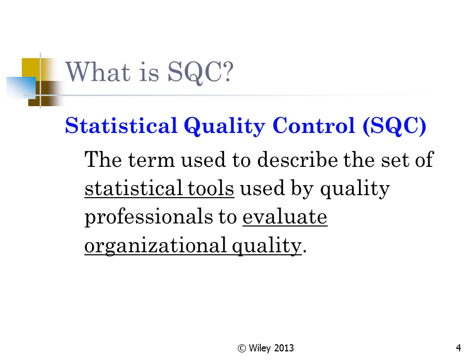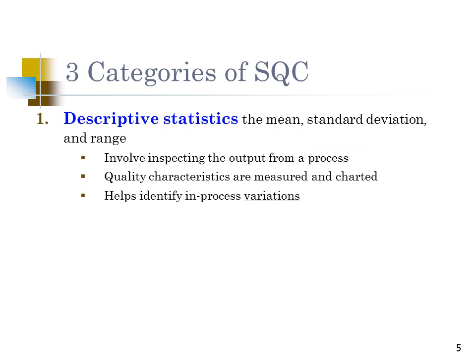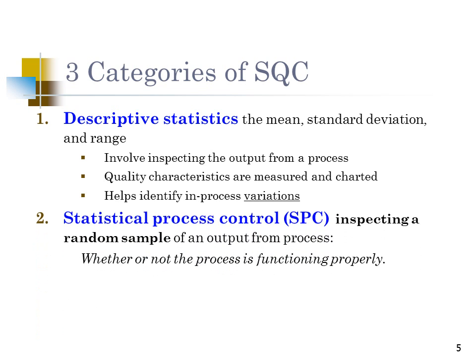What is SQC? It is the set of statistical tools that quality managers and quality engineers use to evaluate and assess quality. There are three categories of SQC. The first is descriptive statistics, which you have seen in other courses — the mean, standard deviation, variance, and range.